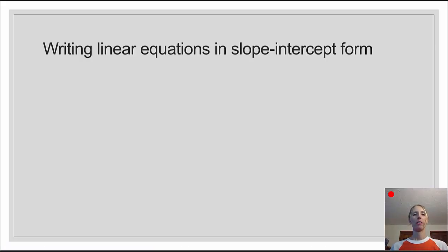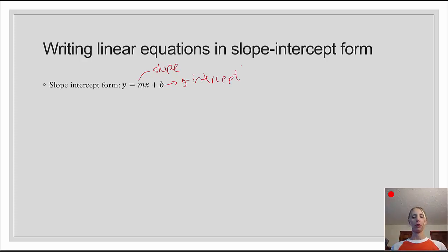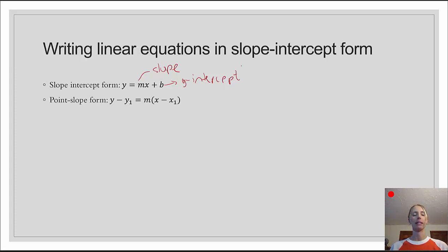When we go to write linear equations in slope-intercept form, let's review what that means. That means we're looking for the form y equals mx plus b, where m is our slope and b is the y-coordinate of the y-intercept. Another important form to know is point-slope form: y minus y1 equals m times x minus x1.